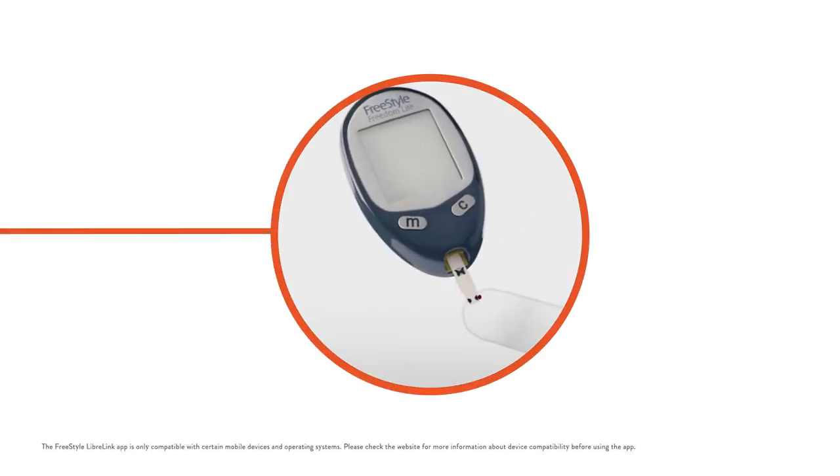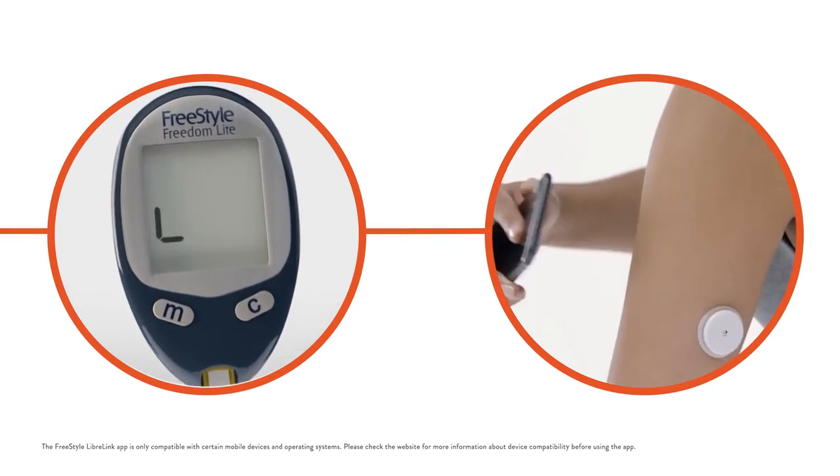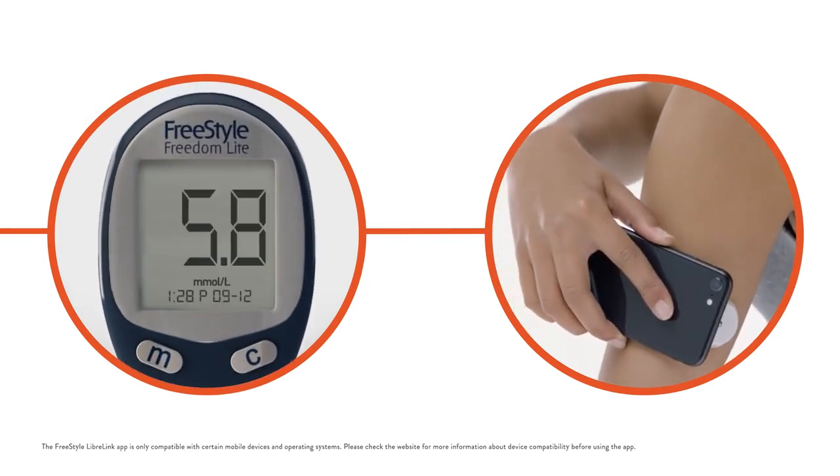Blood glucose monitors measure capillary blood glucose with a finger prick. Scanning the sensor from the Freestyle Libre 2 system measures interstitial fluid glucose.